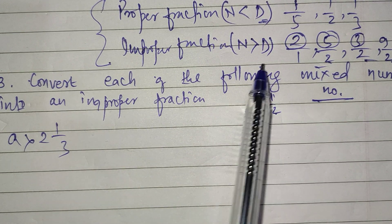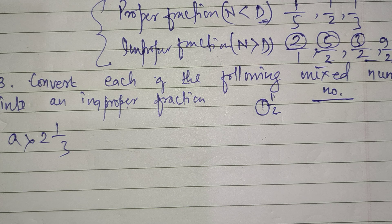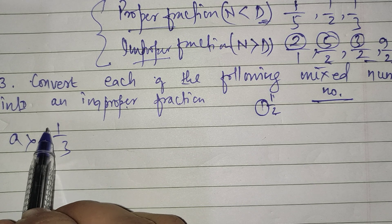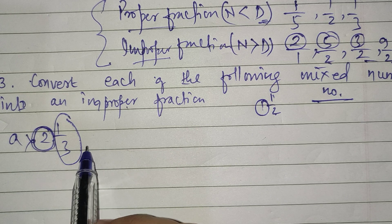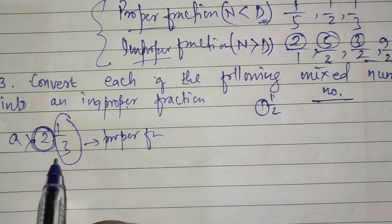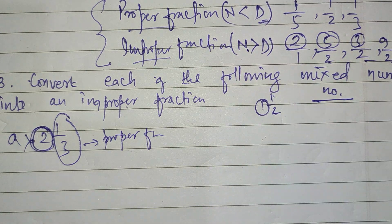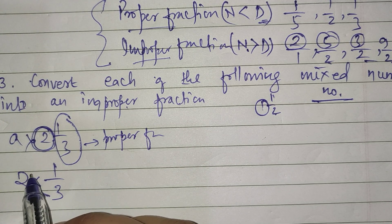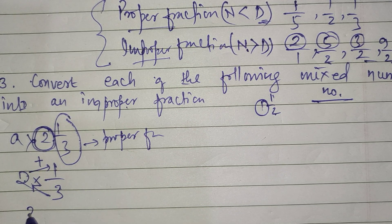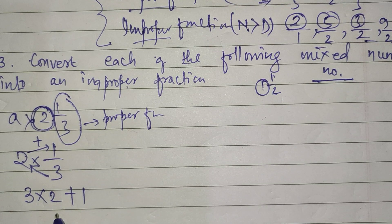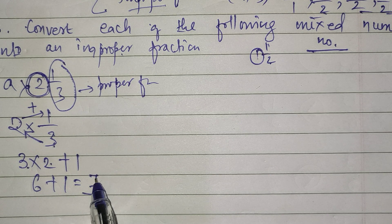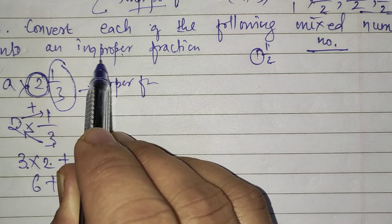So we have to convert the mixed number into an improper fraction. To convert a mixed number — for example 2 whole 1 by 3 — you multiply the denominator by the whole number: 3 times 2 is 6, then add the numerator: 6 plus 1 is 7, and keep the same denominator. So it becomes 7 by 3. You can see the numerator is greater, making it an improper fraction.